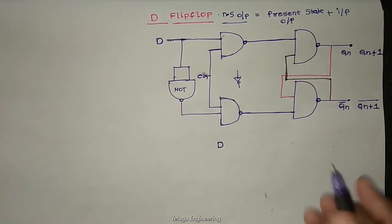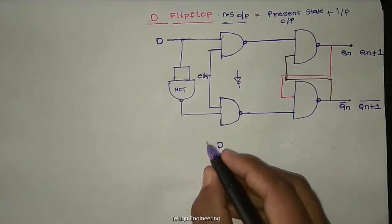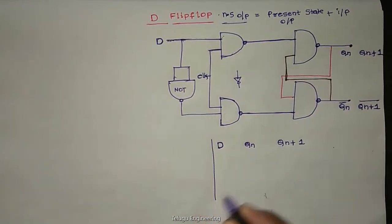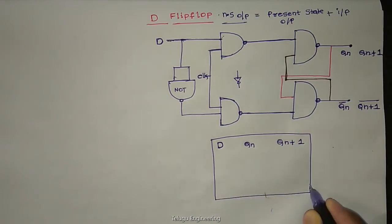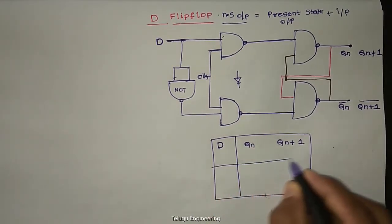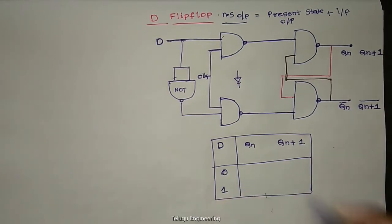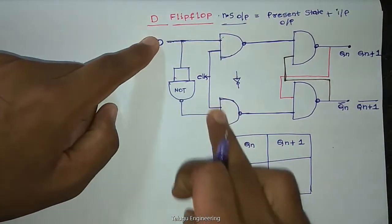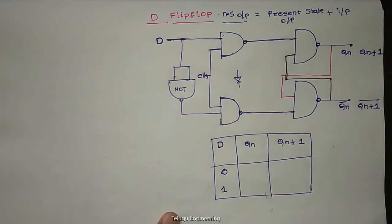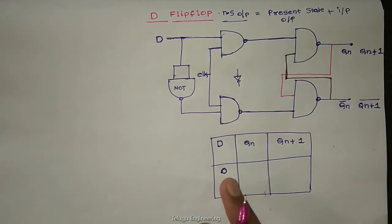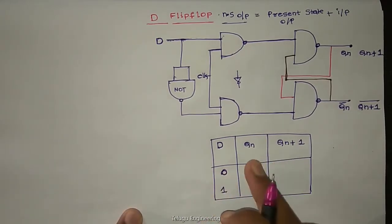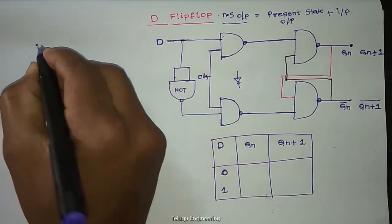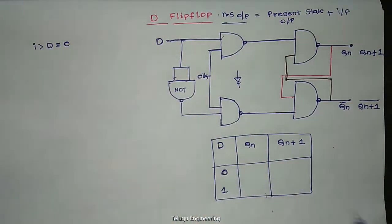Now we will be looking at D and Qn value and Qn+1 value. For D, the possible values are only two: 0 and 1. For this NOT gate, opposite inverted input will come. So first we have to derive what is our Qn+1 depending upon this Qn.